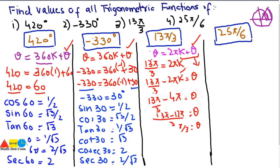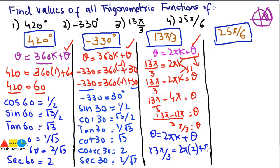So 13π/3 = 2π(2) + π/3, which confirms that 13π/3 is coterminal with π/3. Since π/3 = 60°, you need to find sine, cosine, tangent, secant, cosecant, and cotangent of 60°. As we already found: cos(60°) = 1/2, sin(60°) = √3/2, and the remaining values follow the same pattern.